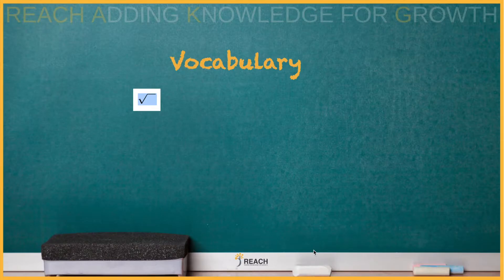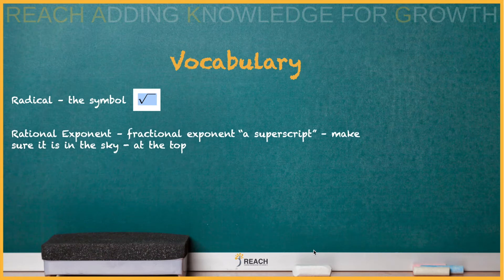Let's look at some key vocabulary. First: radical. Next term: rational exponent — it is a fractional exponent. Make sure it is a superscript; it's up in the sky, and it is not a mixed number.